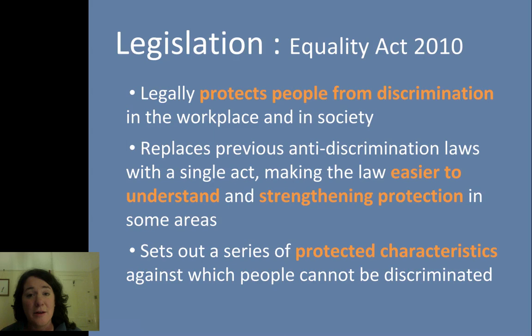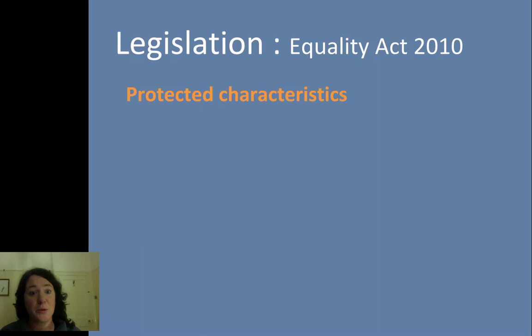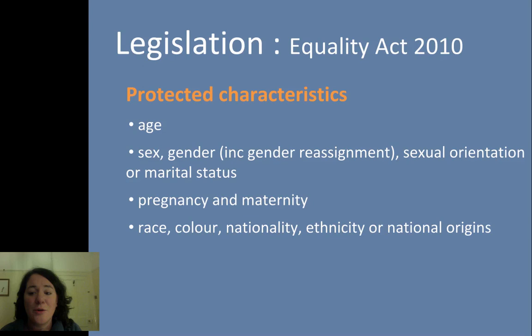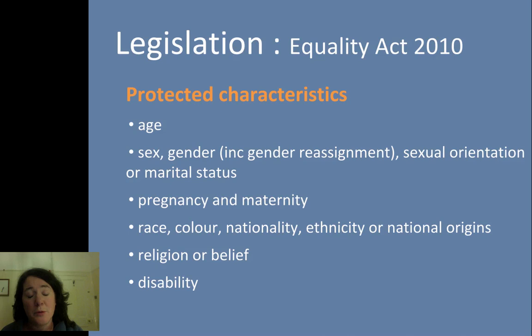The Act sets out a series of protected characteristics against which people cannot be discriminated. These are one of the most important parts of the Act. They cover things like age, sex or gender, sexual orientation and marital status, pregnancy and maternity, race, colour, nationality, ethnicity or national origins, religion or belief, and disability. Each of these are potential areas where people could be discriminated against in the workplace and in society.